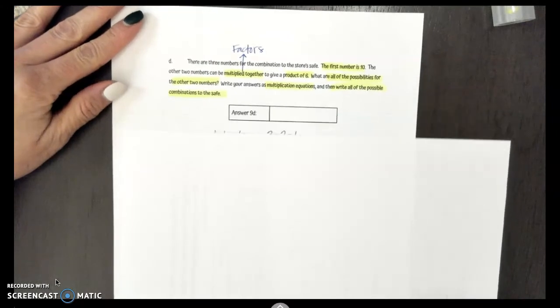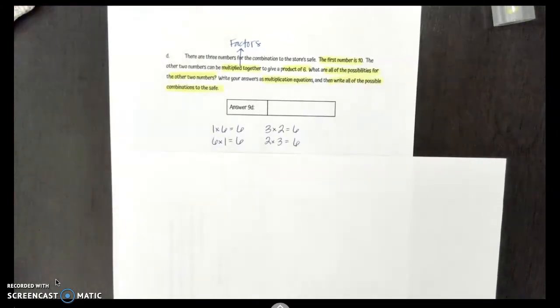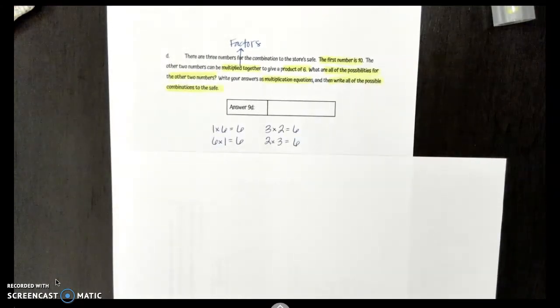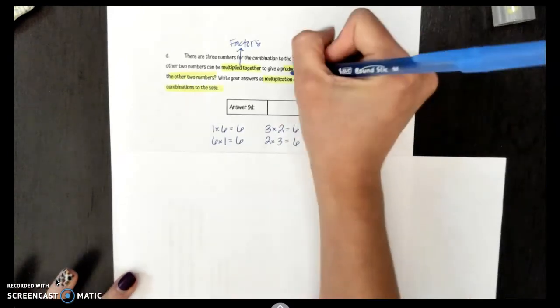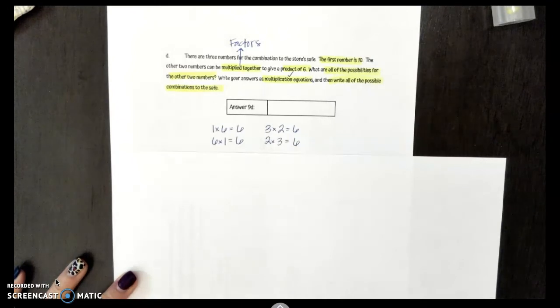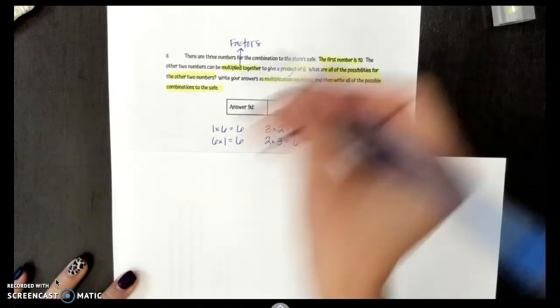And here are my multiplication equations. 1 times 6 gives me 6. And 6 times 1 gives me 6. 3 times 2 gives me 6. And 2 times 3 gives me 6. So those are going to take care of my multiplication equations. Now I need to write all of the possible combinations to the safe.